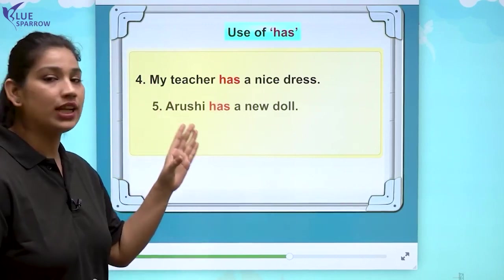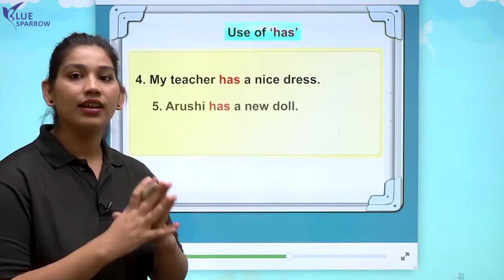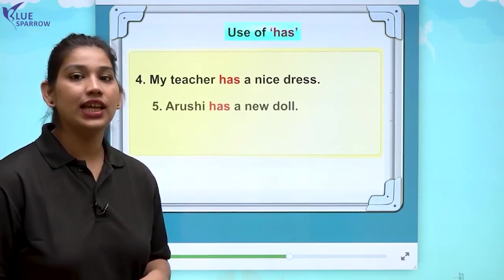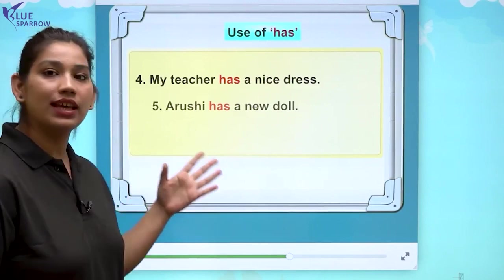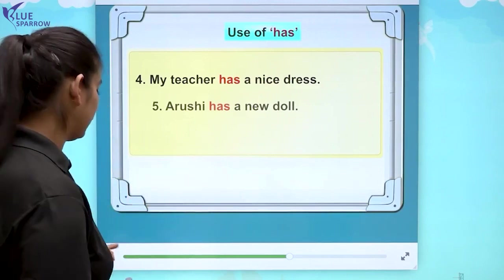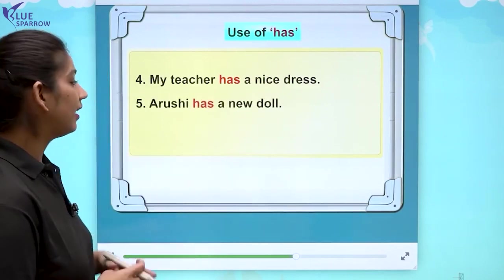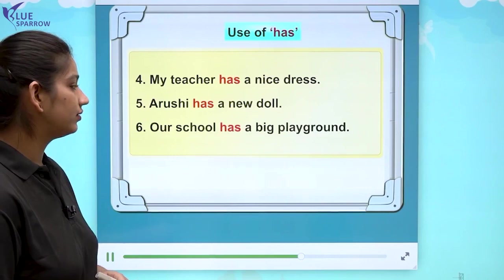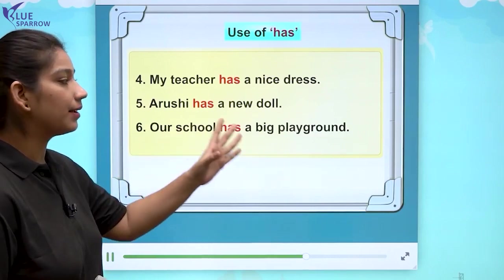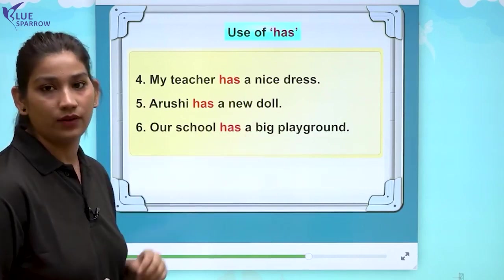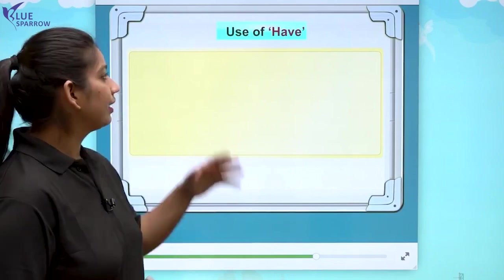Aarushi has a new doll. Aarushi singular hai, isliye ham ne uske saath has use kiya. Our school has a big playground — hamare school mein ek big playground hai.